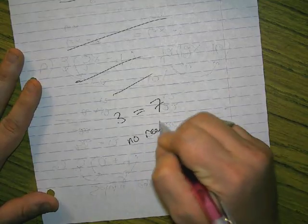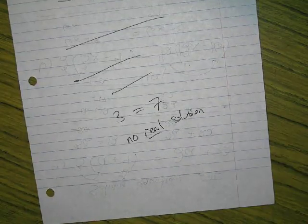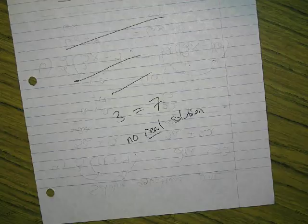We say no real solution, because unless there's a TARDIS involved, that solution is not happening. Right? So those are the two exceptions. If the variable gets completely eliminated, either it works for everything or it works for nothing.